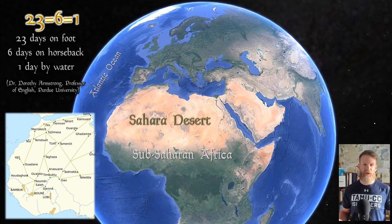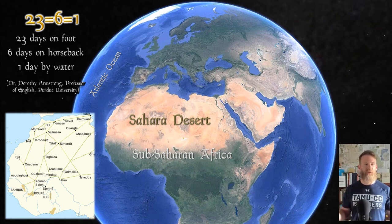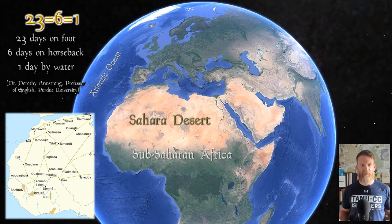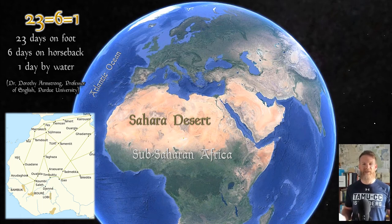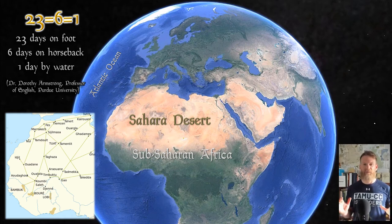There's the 23-6-1 rule: if you have a horse, it will take you six days to travel the same distance it would take 23 days on foot. But if you can travel by water, you can go in one day the distance a horse covers in six days or 23 on foot. There is also this unspoken assumption that people have about sub-Saharan Africans living in huts in the same village their whole life, knowing nothing about the rest of the world — a western idea that comes from colonialist texts from the 1800s and racist cartoons from the mid-20th century.